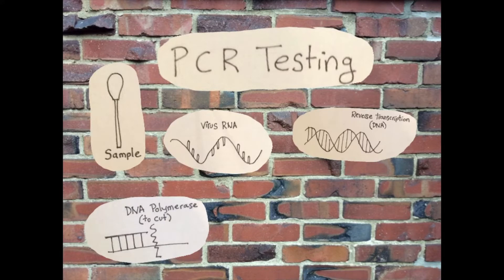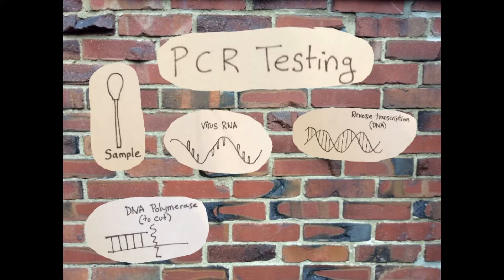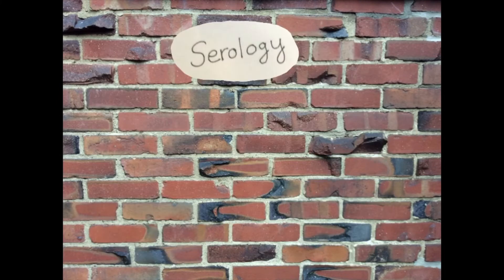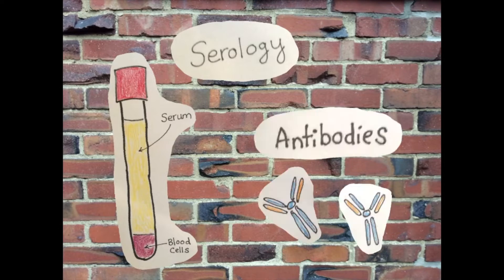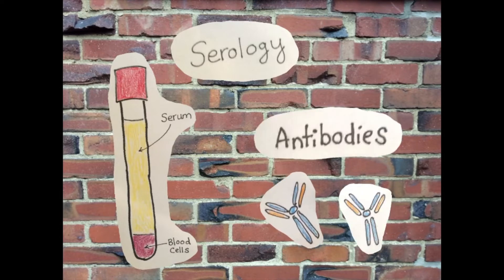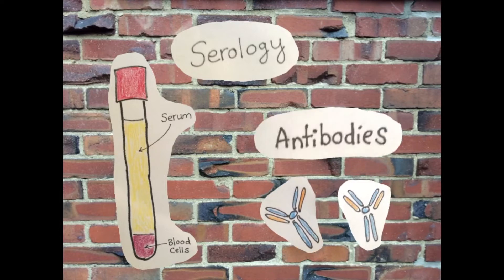PCR testing is a way that amplifies sections of a virus's RNA sequence and looks for it in the lab. A way to check if someone was infected with SARS-CoV-2 is to look for the body's response by looking for antibodies to the virus in circulation.